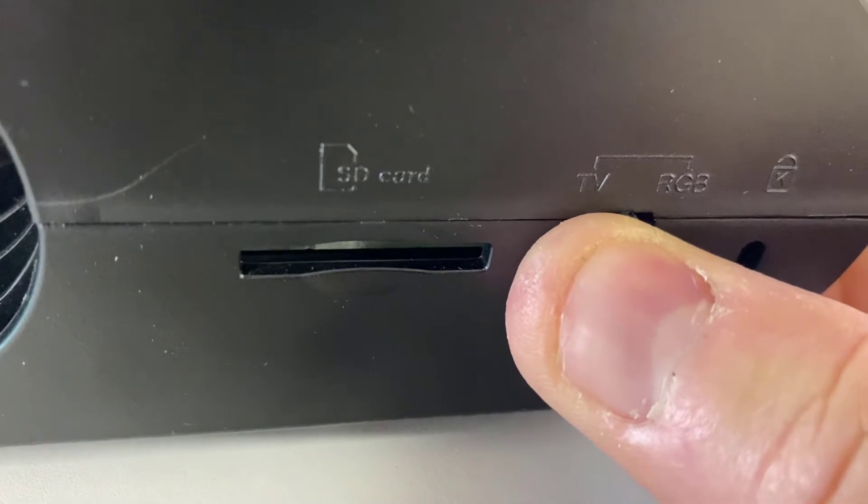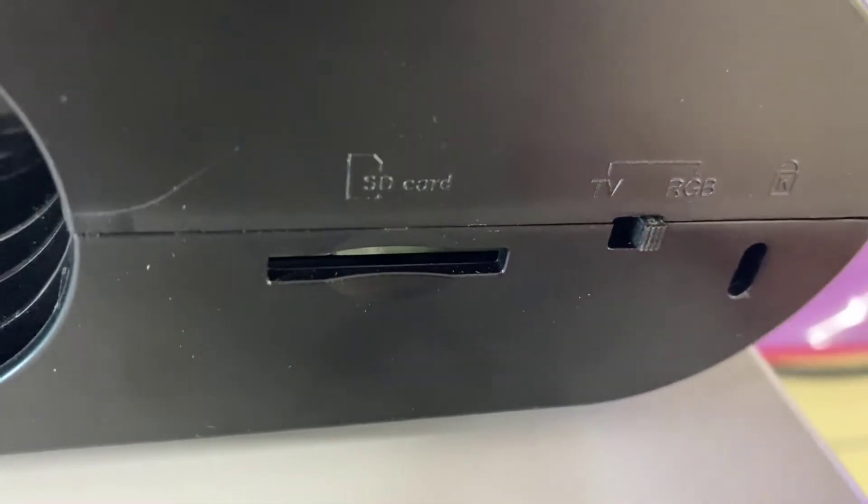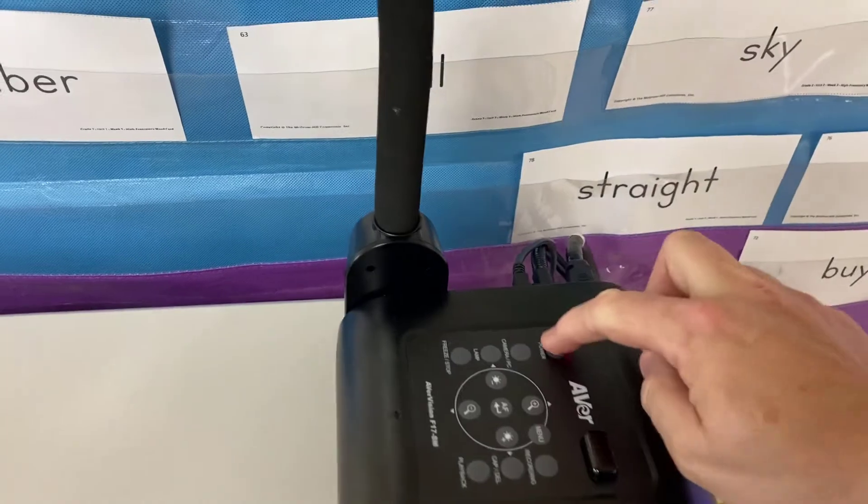It has to be RGB. So I'm going to flip the switch over to RGB, and I'm going to turn the document camera back on.